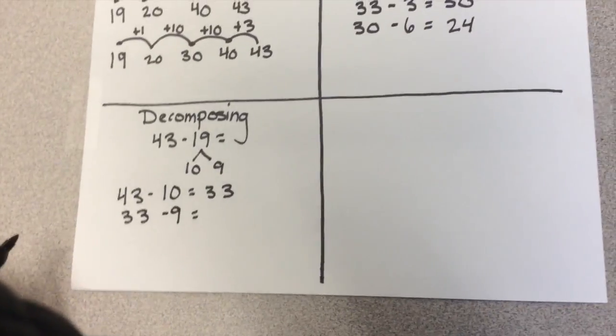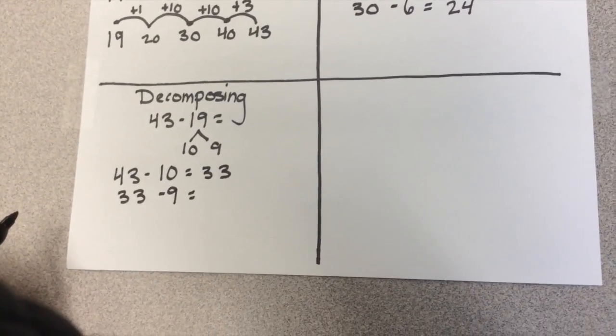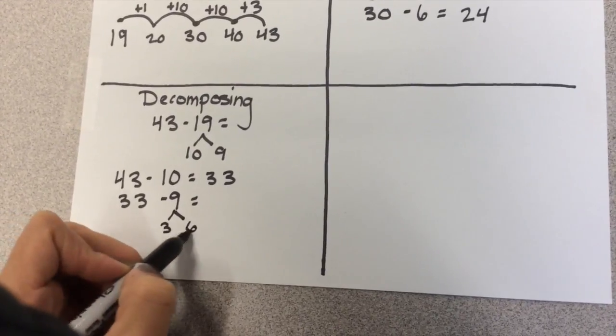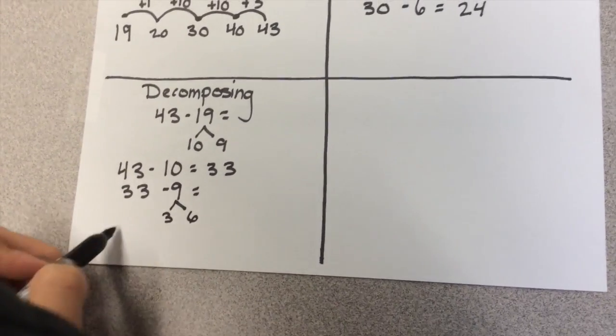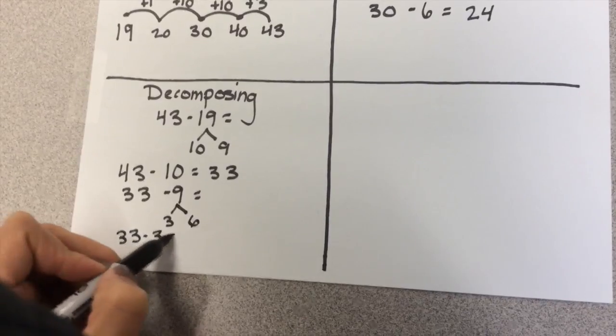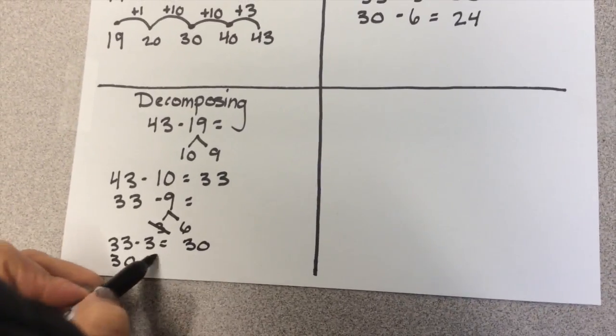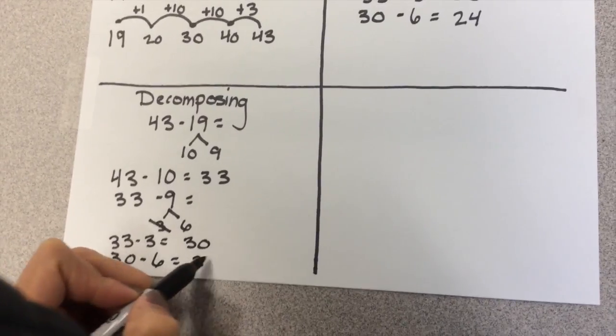Other kids might see the 9 and break it into a friendly number of 3 and 6, similar to incrementing. And so we would have 33 minus 3 is 30, and then 30 minus the 6 is 24.